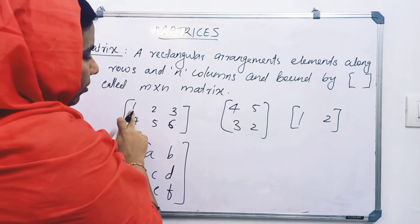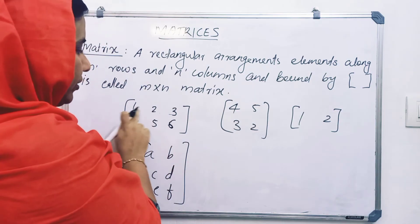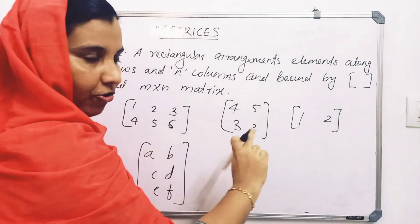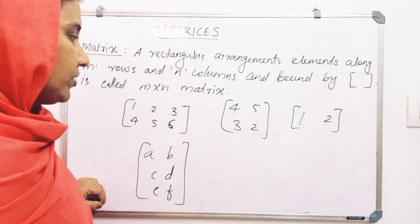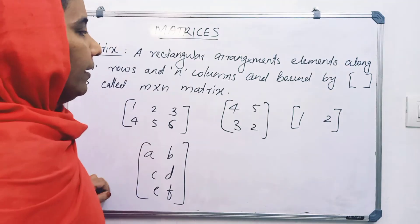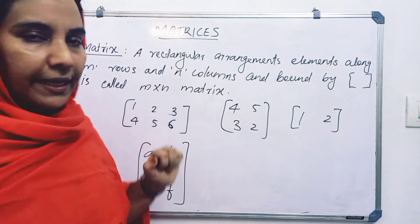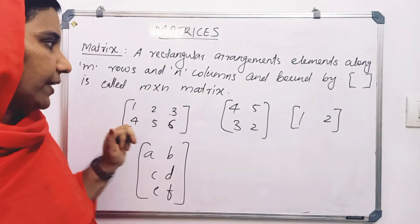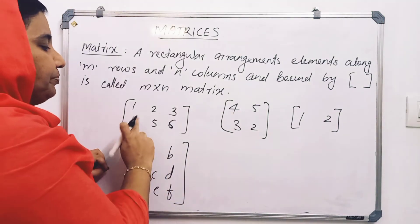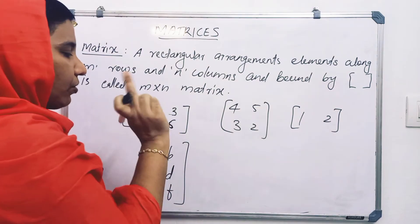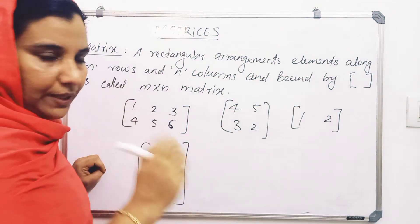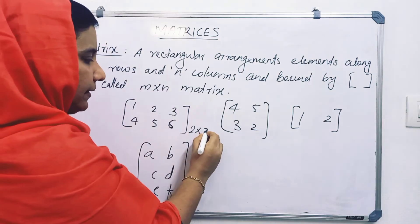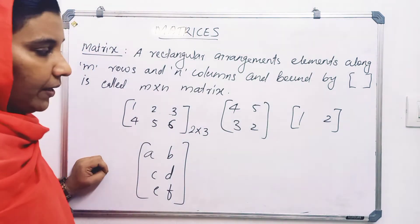Rows are horizontal. For example, 1, 2, 3 is row 1, and 4, 5, 6 is row 2. Columns are vertical: 1, 4 is column 1; 2, 5 is column 2; 3, 6 is column 3. So this is a 2 by 3 matrix.